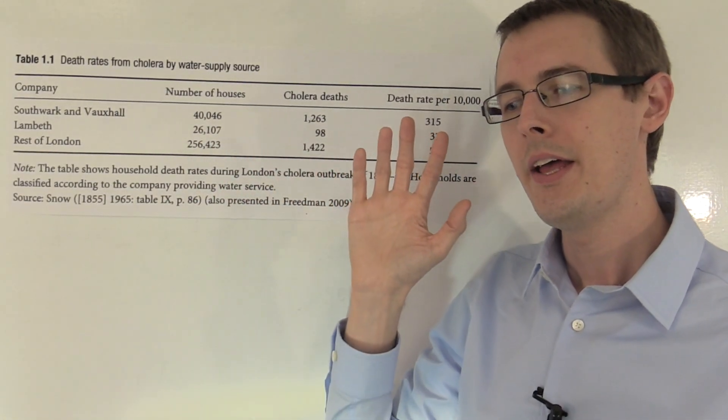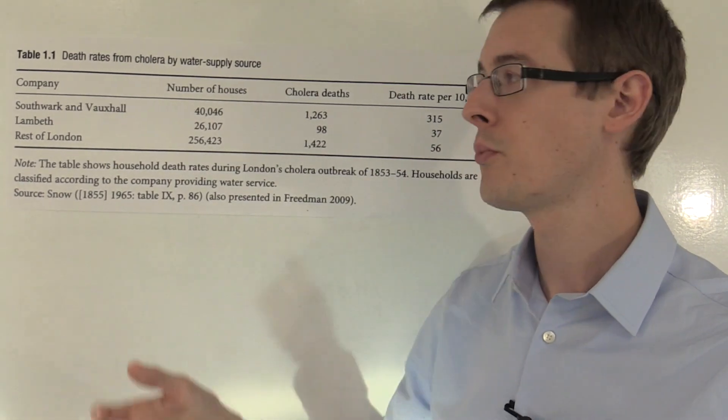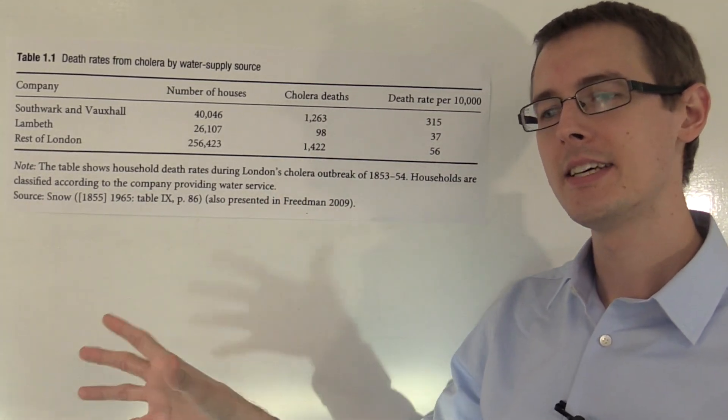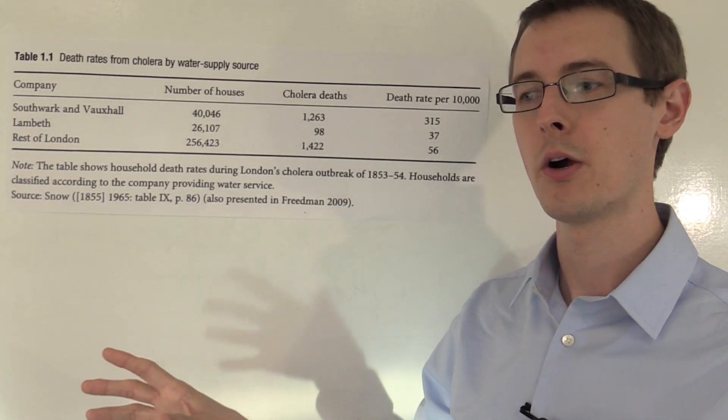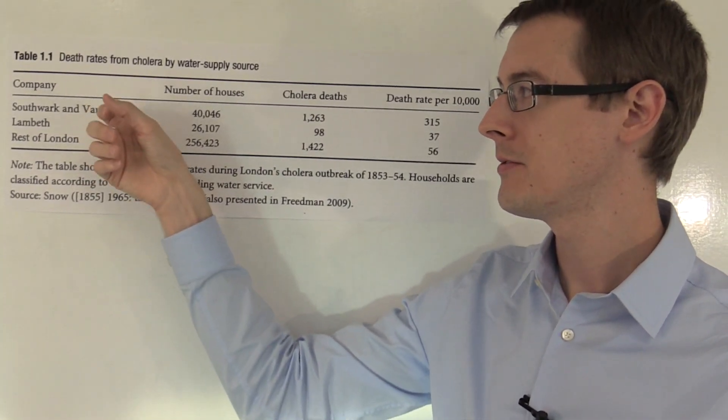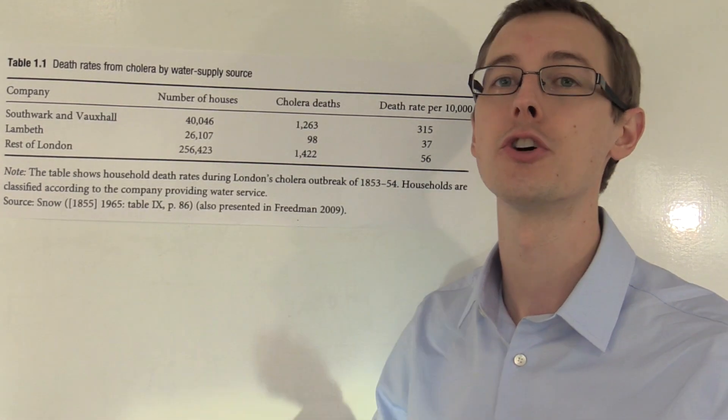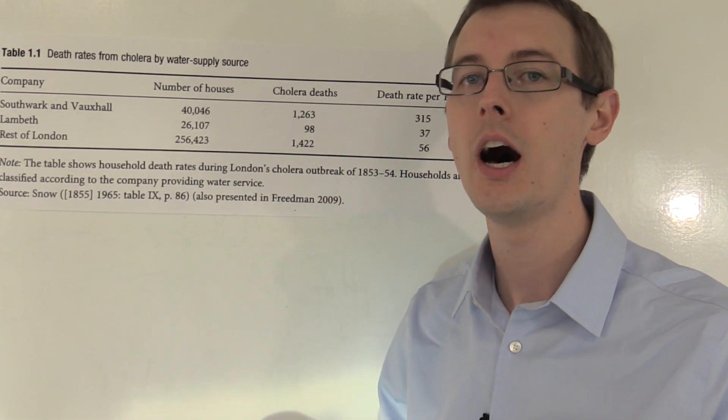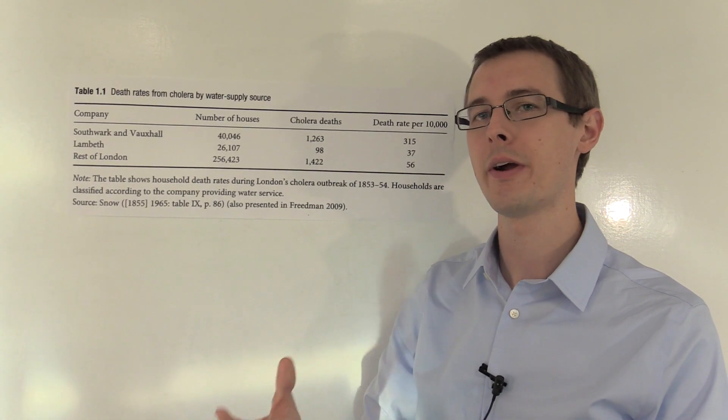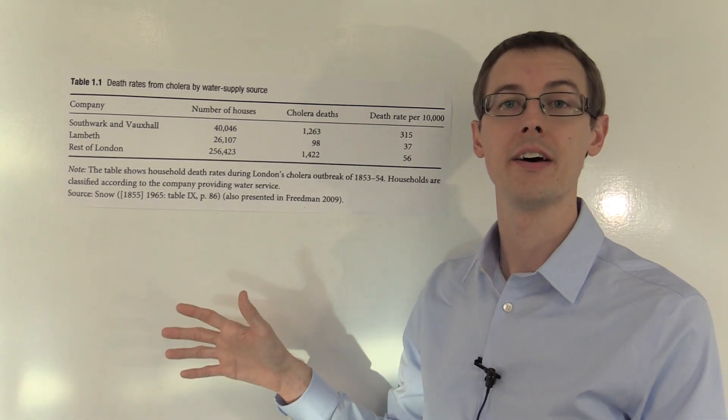If you believe that houses were basically randomly assigned to which company they got water from, then this is an as-if natural experiment, where all we have to do is compare the average rate of deaths due to cholera in these two groups to learn about the causal effect of consuming dirty water on whether you'll die from cholera. I'll talk about how we justify the as-if randomization assumption in a few minutes, but now let's just look at the data.